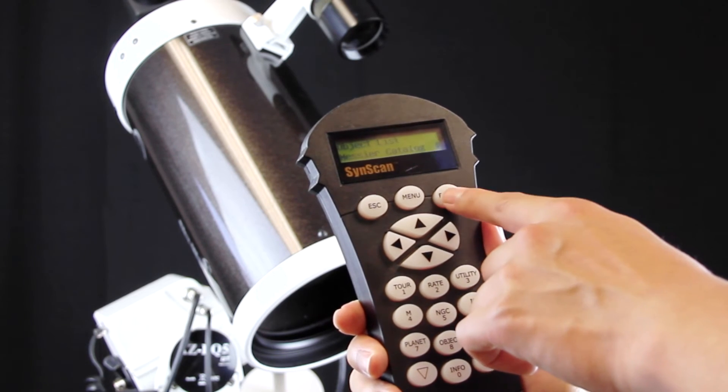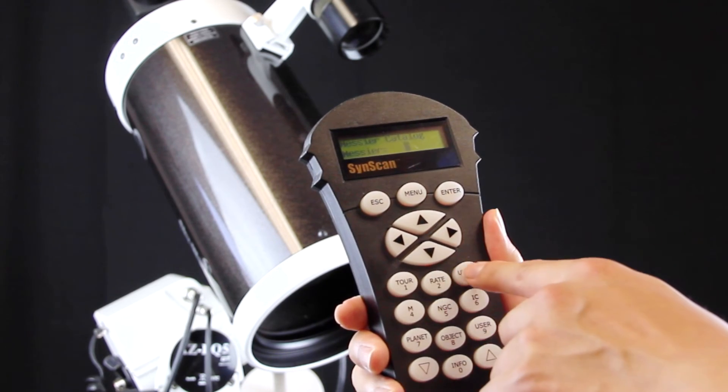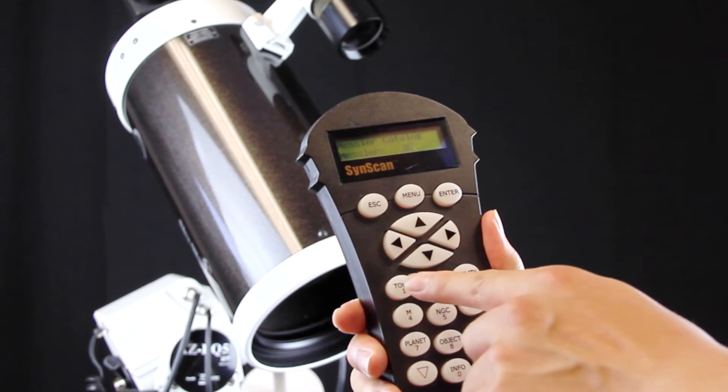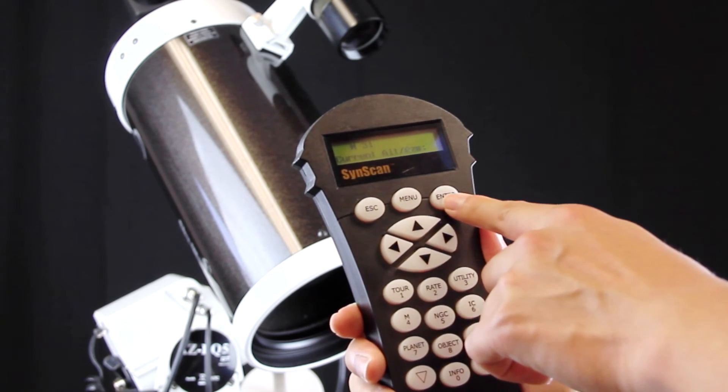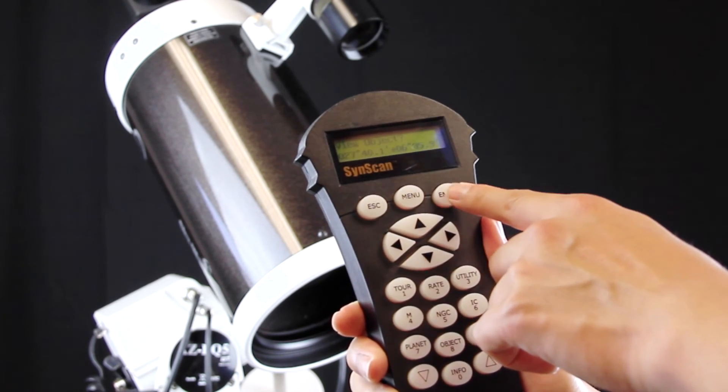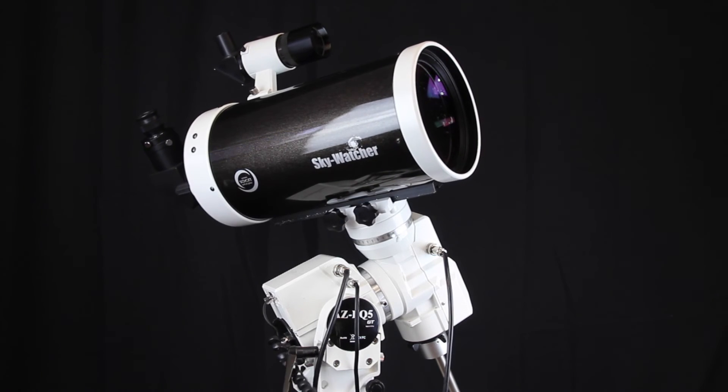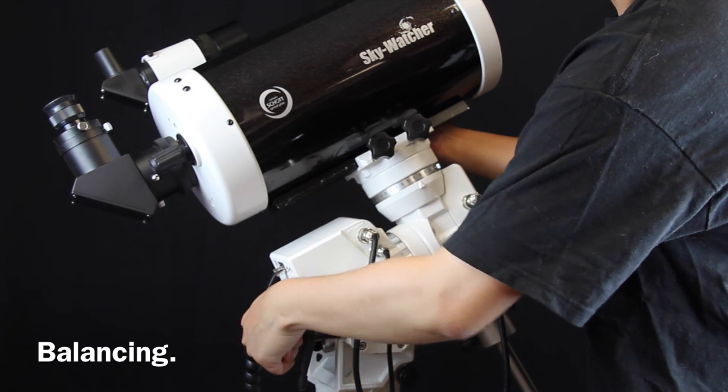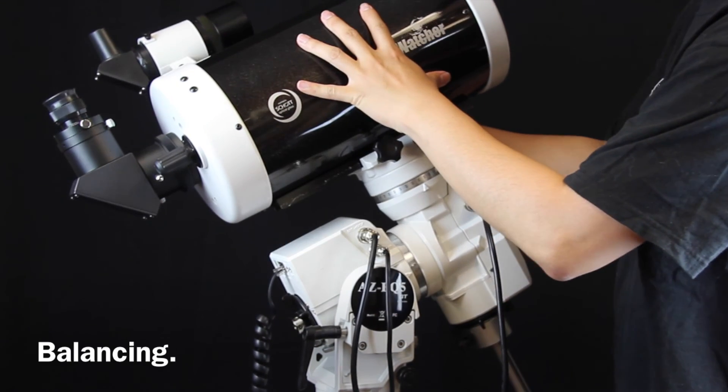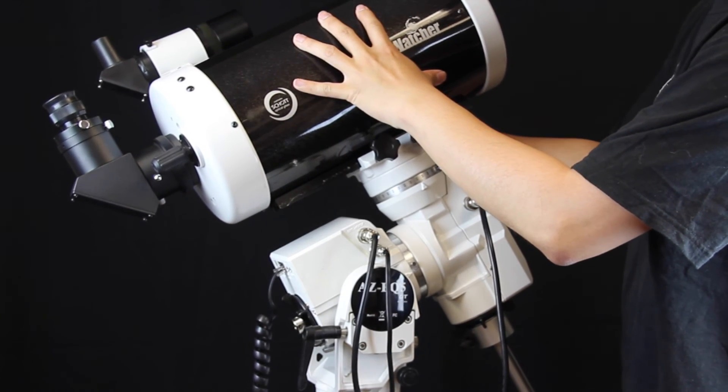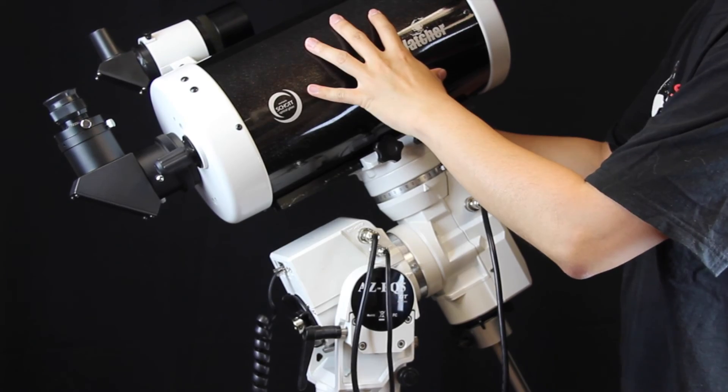For example, we want to find M31. Here it is. You can start observing now. Last but not least, you always want to balance your mount well, especially for astrophotography and when you have a heavier scope or eyepiece.